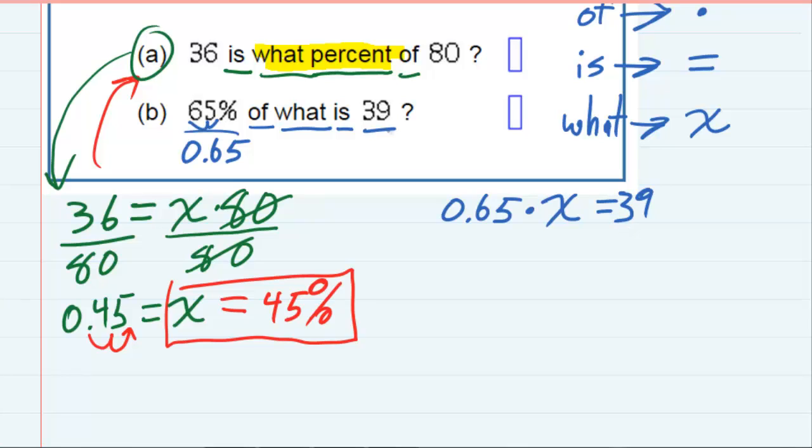So I've again done the translation. And here again, to solve it for X, I'm going to be dividing both sides. But this time I'm dividing by 0.65 both sides. That will cancel the 0.65.